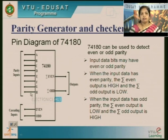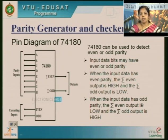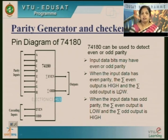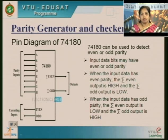The input bits may have even or odd parity. When the input data has even parity, the even output will be high. When the input has odd parity, the output is low. When the input data has odd parity, the even output is low and the odd output is high. Based on what kind of inputs you give to the 74180 IC, you generate the output either 1 or low. There are two outputs: one for even and one for odd.